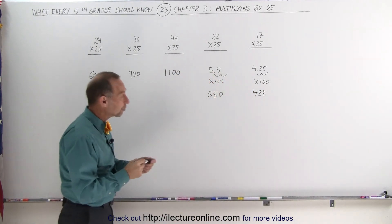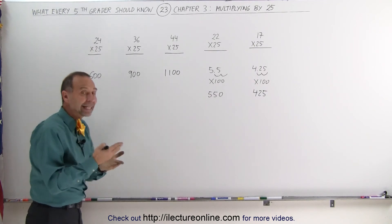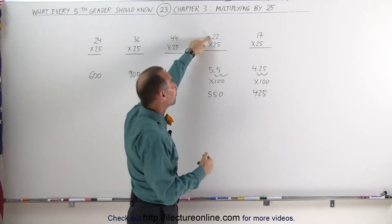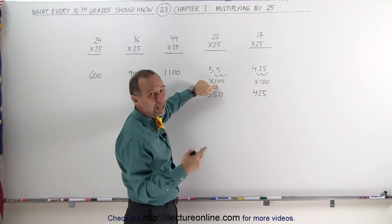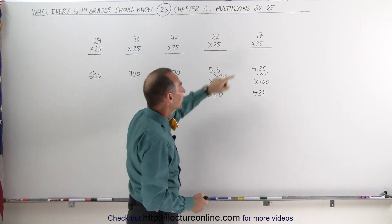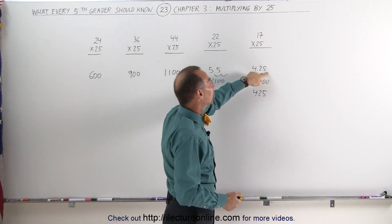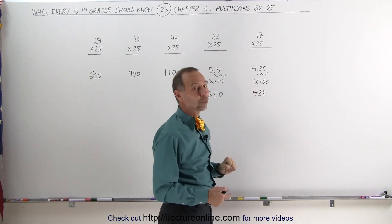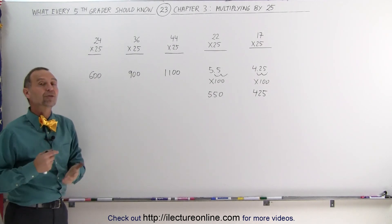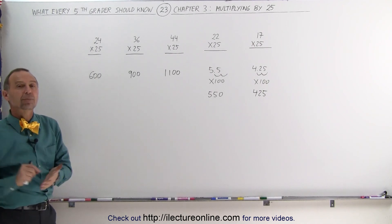So the way you multiply times 25: you take the number, divide it by 4, add two zeros. If you can cleanly divide the number by 4, great. If you can't — like 22 divided by 4 gives you 5.5 — add two zeros, or really multiply times 100, meaning move the decimal place over two places, and you get 550. 17 divided by 4 is 4.25; move the decimal place over twice and you get 425. That's how we multiply very quickly, in our head, a number by 25: divide by 4, add two zeros — or divide by 4 and move the decimal place over twice.